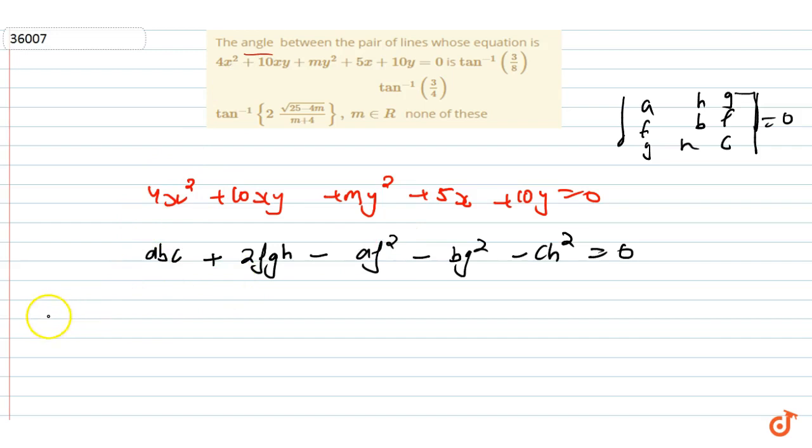Now we have to solve this determinant. The value of a is 4, b value is m, c value is 0. Then 2 times f, where f is 5/2, g is 5/2, and h is 5.